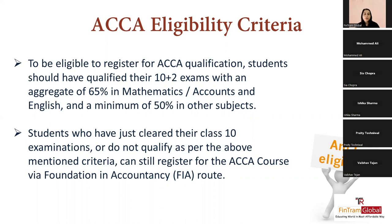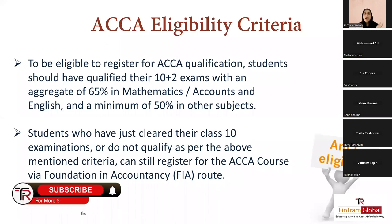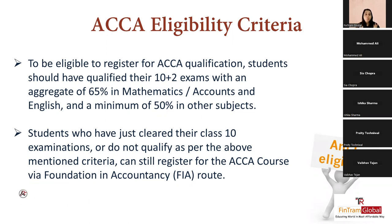If you haven't met the first criteria or have just cleared Class 10, you can still do ACCA through the FIA route — Foundation in Accountancy. The FIA route is not different: in ACCA the first level is the Knowledge level with three exams; FIA also starts from those same three exams, and once you clear them you move to the Skill level in both routes. I'd always suggest starting as early as possible — if you start early, you might become an ACCA in your early 20s with far better job opportunities.